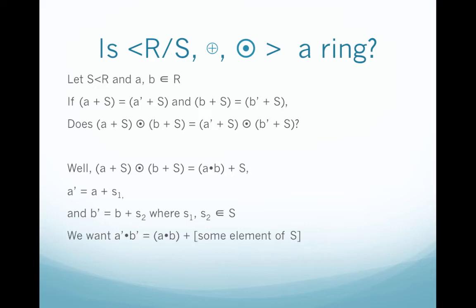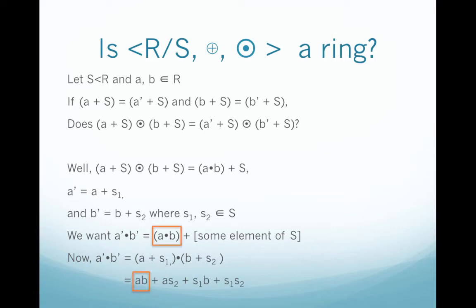So in order for it to truly be well defined, we want A' times B' to equal AB plus some element in S, and that will show us that they're in the same coset. We can just substitute in for A' and B', so we get A'B' = (A + s₁)(B + s₂), and then we can FOIL. Now you see we have our AB and we have some element in S, but we don't know about those two terms in the middle, whether or not they're in S.